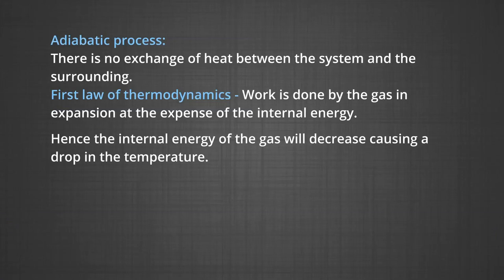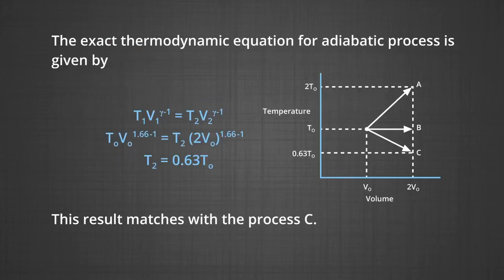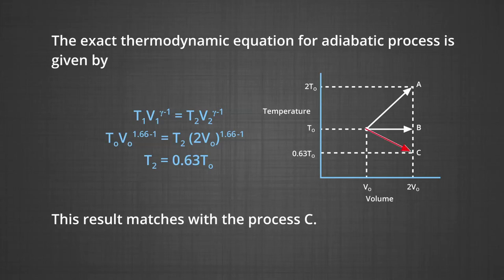The third case is the adiabatic process. In this process there is no exchange of heat between the system and the surroundings. By the first law of thermodynamics, work is done by the gas in expansion at the expense of internal energy, so the temperature drops. The adiabatic equation is T₁V₁^(γ−1) = T₂V₂^(γ−1). Putting in the value of gamma gives T₂ = 0.63 T₀, which matches process C.